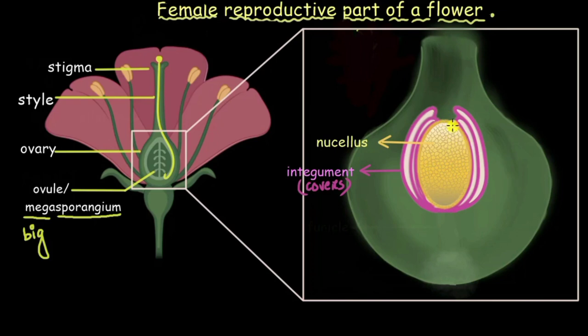Okay let me tell you, it is left uncovered so that the pollen tube from the pollen can come and reach the female gamete.